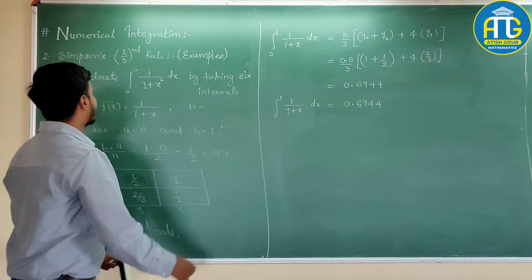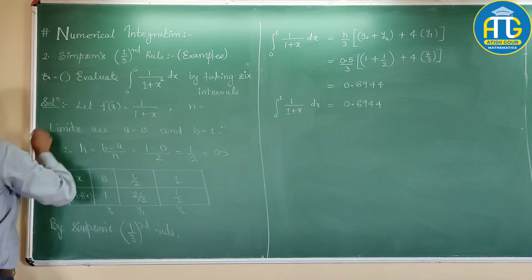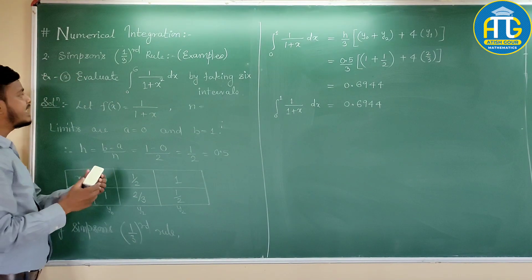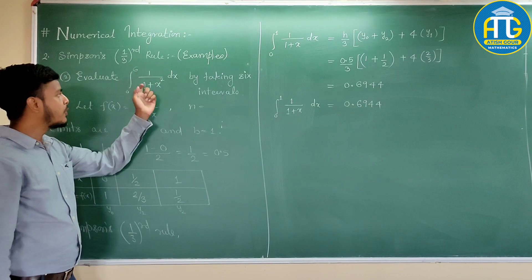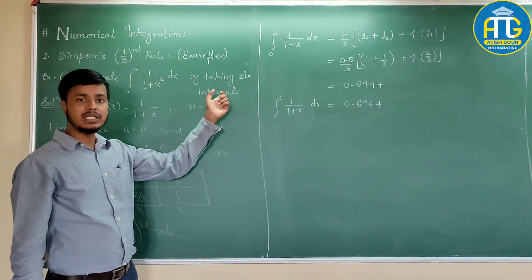Let us see the very next problem. Example number 2: evaluate integration from 0 to 6 of 1 upon 1 plus x square dx by picking 6 intervals.